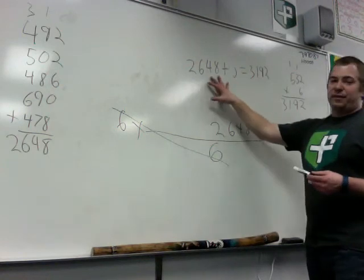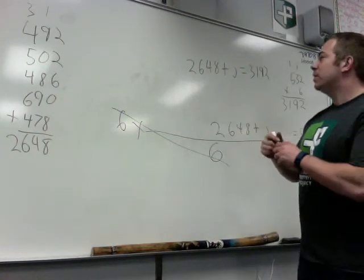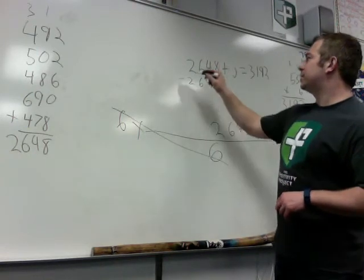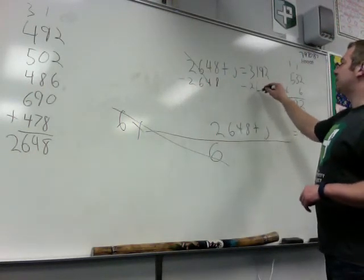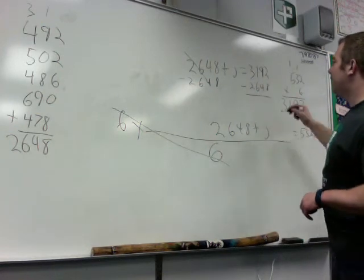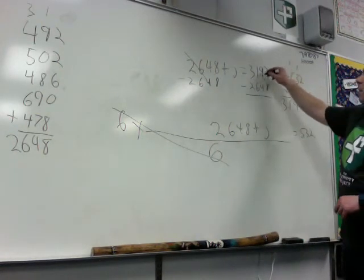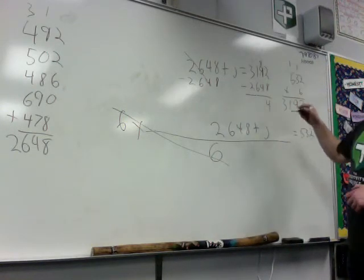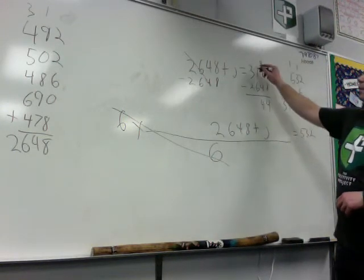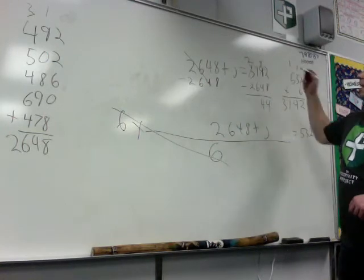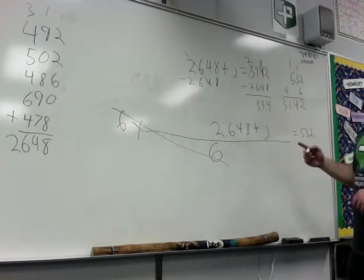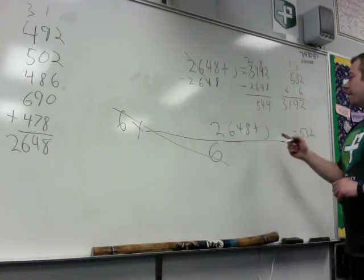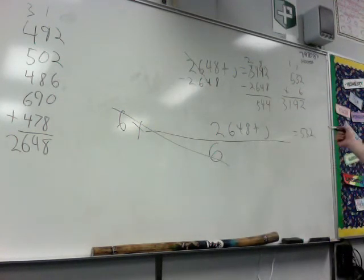So what I'm left with is 2,648 plus my one month I didn't know about equals 3,192. And what's the opposite of adding? Well, it's subtraction. So I'm going to subtract 2,648 from this side. Gone. Subtract 2,648 from this side. Here we go. I have to borrow. That becomes an 8. This is 12 minus 8 equals 4. 8 minus 4 equals 4. I need to borrow again. 11. 11 minus 6 equals 5. And 2 minus 2 equals nothing.